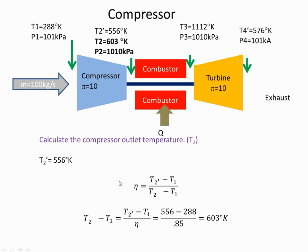The isentropic efficiency of a compressor is given by this formula. That was derived in a previous video. When I plug the values in, 556 here, the 556 is the ideal, minus T1 which is 288, I will get 603 degrees Kelvin for T2.